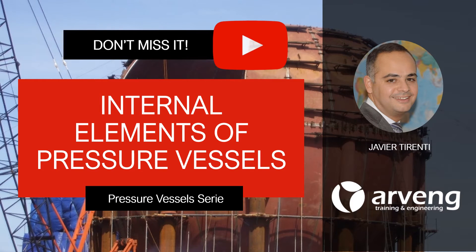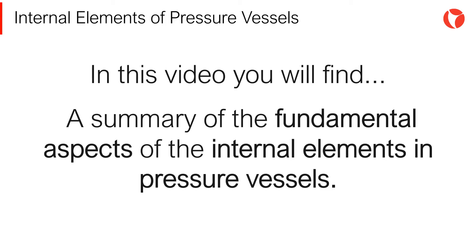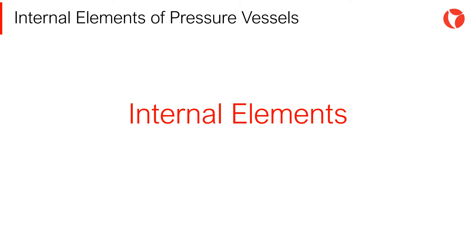Hi there! You are watching a video of pressure vessels in industrial plants. Process vessels frequently have different types of internals that must be supported by the vessel shell. Filters, fractionators, packed columns and reactors with catalyst beds are just a few examples of vessels that have internals.